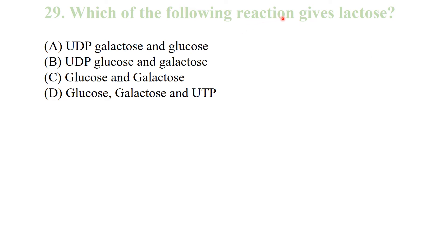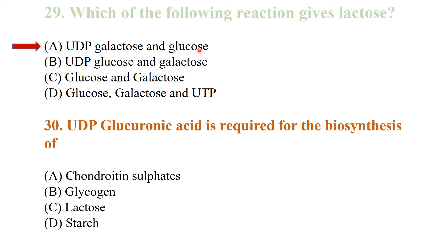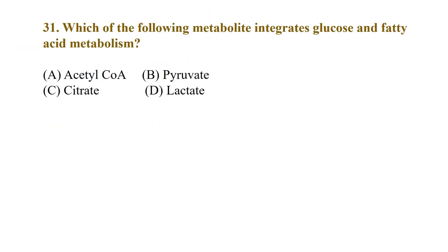Which reaction gives lactose? As we know, lactose is a disaccharide made up of galactose and glucose. The reaction involves UDP-galactose and glucose — UDP-galactose plus glucose forms lactose. UDP glucuronic acid is required for the biosynthesis of chondroitin sulfates.